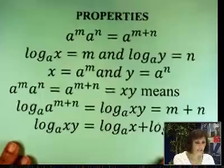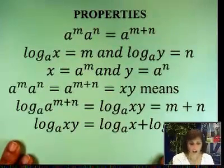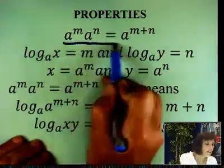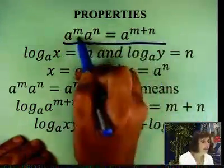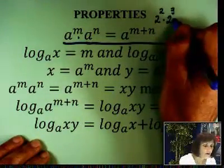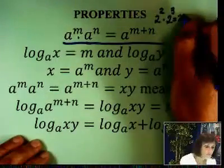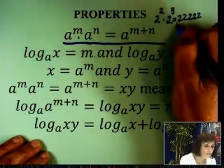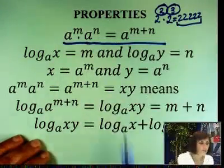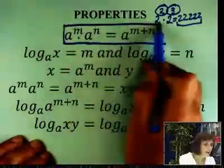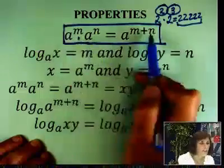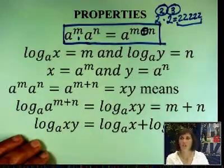Okay, properties. Product property. I'm going to start with the exponent and we're going to go to the logarithm. A to the M times A to the N. Something like this: two to the second times two to the third. Two to the second is two times two. Two to the third is two times two times two. Total of five. What you end up doing is add the two exponents. So A to the M times A to the N is A to the M plus N. Even though there's a multiplication here, that's going to translate as an addition in there.